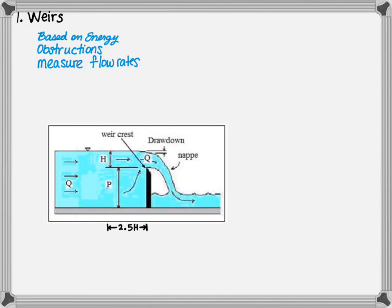The term nape is used for the sheet of water flowing over the weir. When flows over a weir are free flowing, as shown in the image, an air pocket will form under the nape.